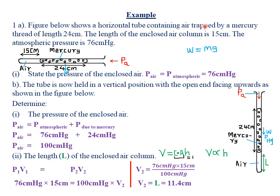Our first example: a horizontal tube contains air trapped by a mercury thread of length 24 cm. The length of the enclosed air column is 15 cm and the atmospheric pressure is 76 cmHg. We are told to state the pressure of the enclosed air. Note that cmHg means centimeters of mercury, which is pressure due to a mercury column.